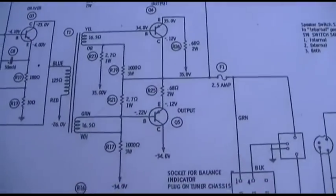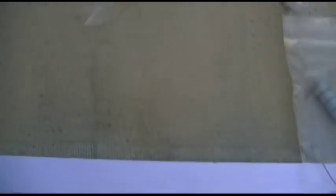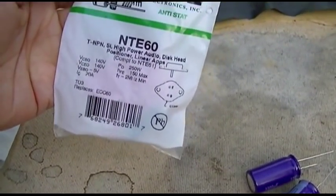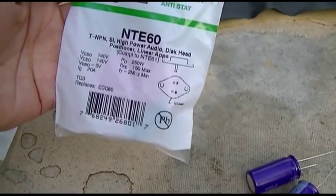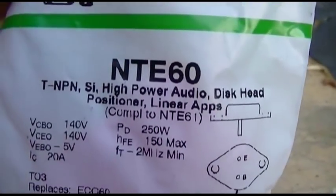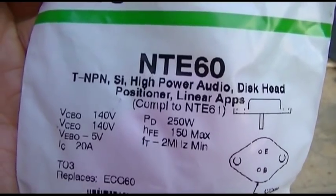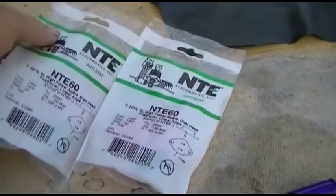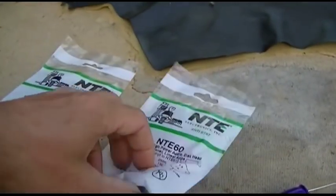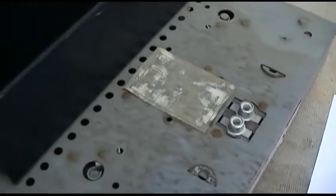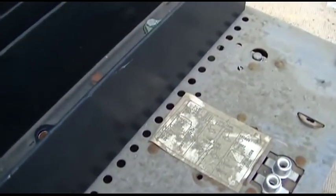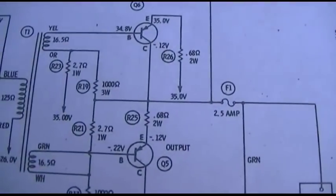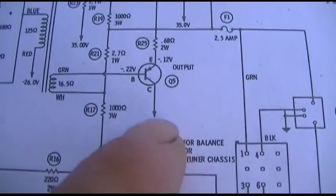I went to the local electronics store and they didn't have the MJ transistors. I can get those off eBay, but this guy is kind of in a hurry to get this working, so I ended up with NTE60s, which is the cross reference. This is a pretty robust transistor. I know they're not gain matched, but this is not a high power, high performance amplifier.